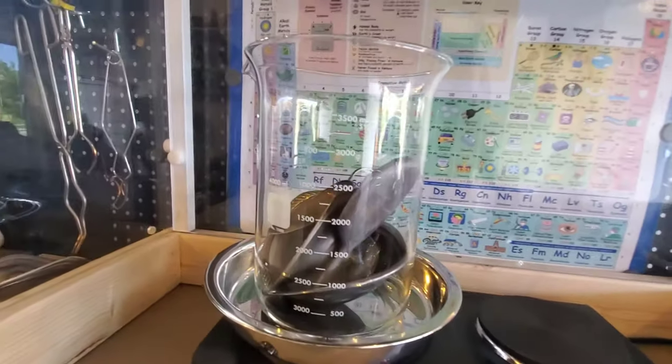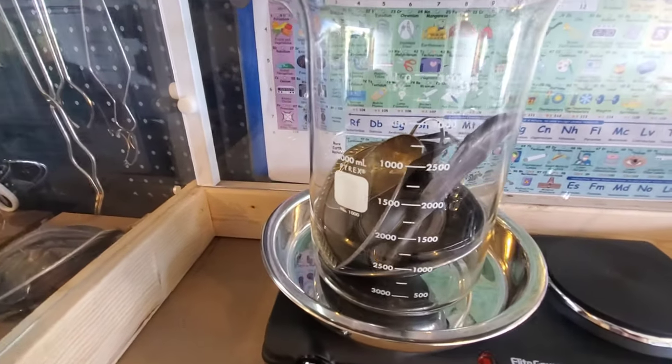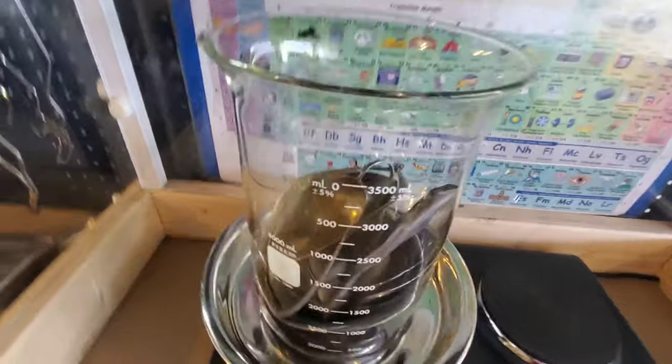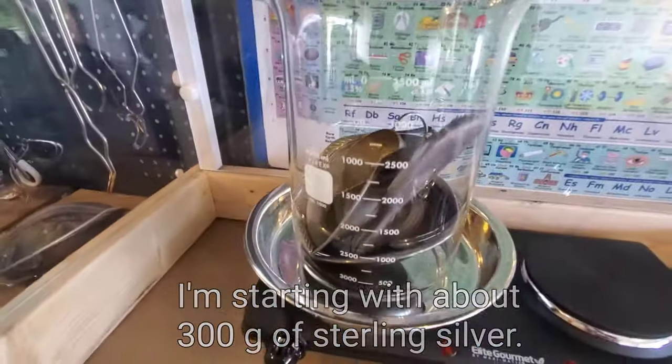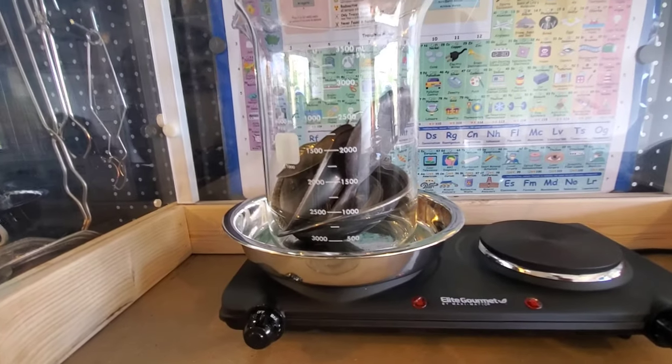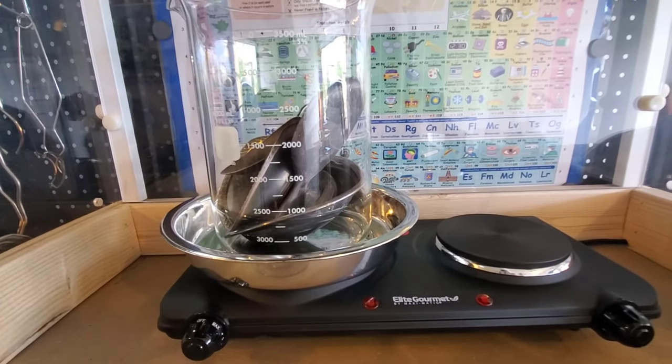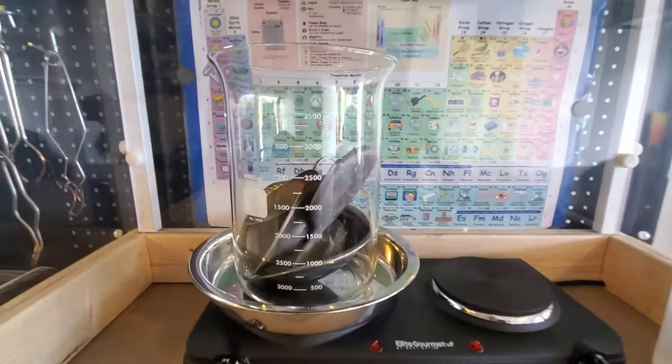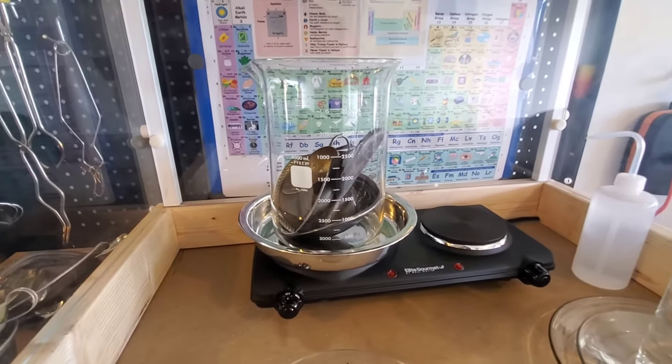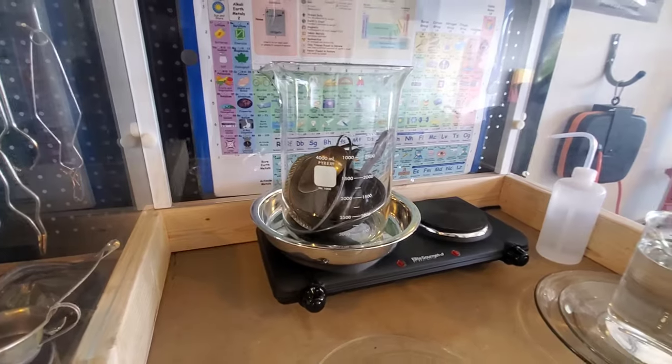Here you can see I have some of the sterling silver that I'm starting off with in the beaker here. And then in a second I'm just going to add some distilled water along with some nitric acid which will start the reaction in the refining process.